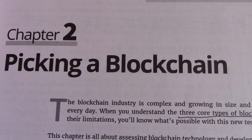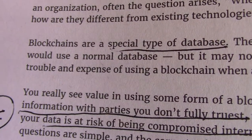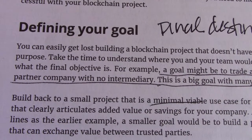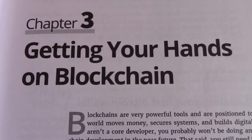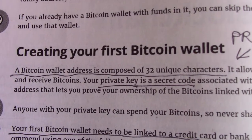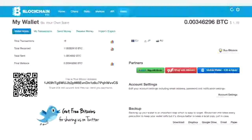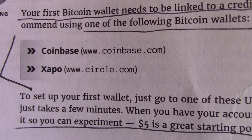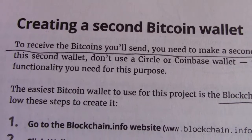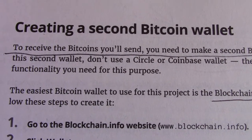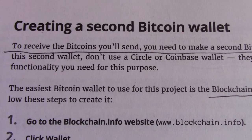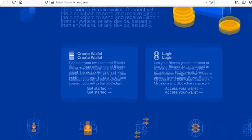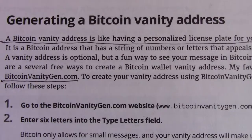Picking a blockchain. Blockchains are a special type of database. First, you want to determine your needs, then define your goal, then choose a solution. Getting your hands on blockchain — creating your first Bitcoin wallet. It's pretty straightforward. Use Coinbase. There are probably other places you can go by now. You want to create a second Bitcoin wallet because you'll want to receive the Bitcoins you'll send. Then you need a Bitcoin vanity address.